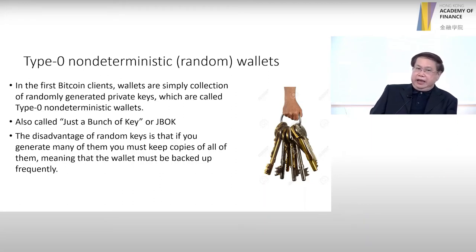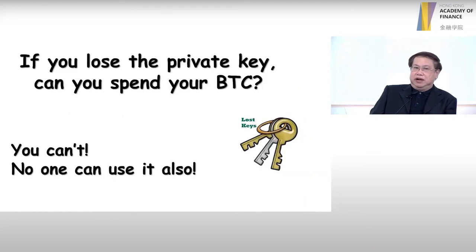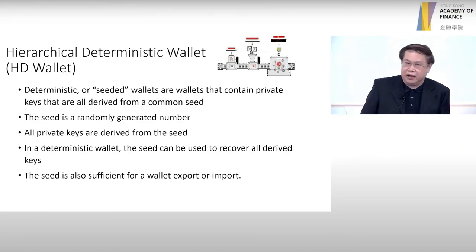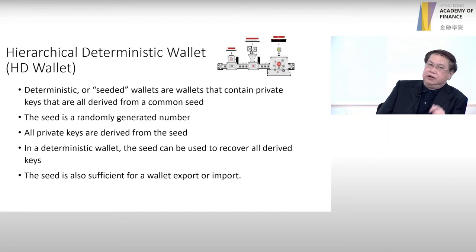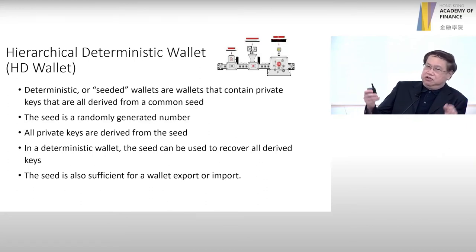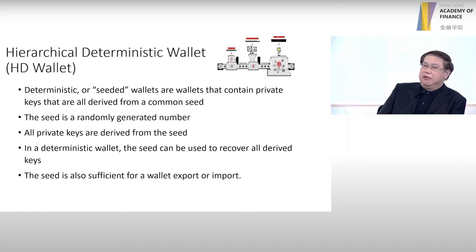That's why today all people are using the so-called deterministic wallet, or seed wallet. All private keys can be generated from a seed. So what you have to do is remember the seed. No matter how many keys you generate — for example, 1,000 or 2,000 keys receiving 10,000 transactions — all this can come out from a single seed. That's what we call the seed wallet or deterministic wallet. If you purchase this kind of wallet from the market today, all of them now support the deterministic wallet.